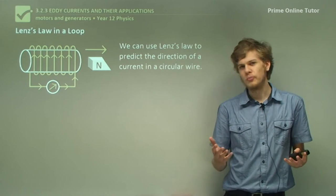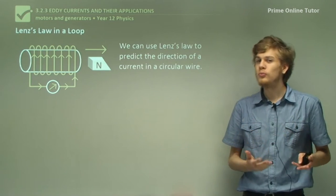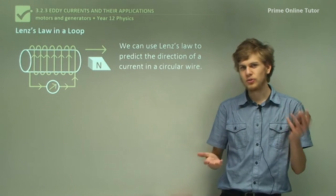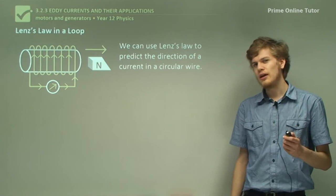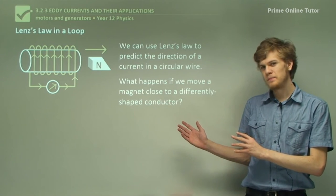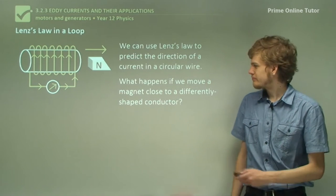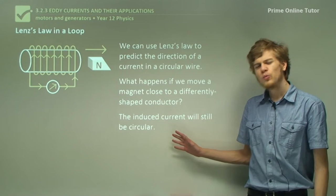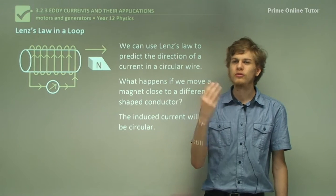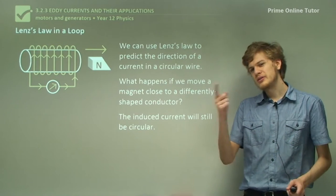So let's go back to Lenz's Law for a moment. We know that we can use Lenz's Law to predict the direction of current that flows in a loop of wire, or in this case, a coil of wire. But what happens if we don't have a coil of wire? What happens if we have a differently shaped conductor, like a flat sheet or a box made of metal? Well, the induced current will still be circular — still clockwise or anticlockwise — depending on whether the magnet is moving away or forward. But it won't be confined to just one single circle.